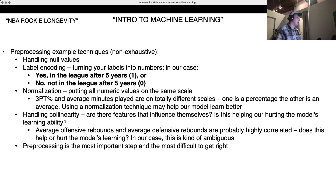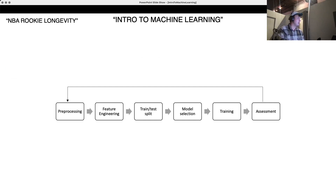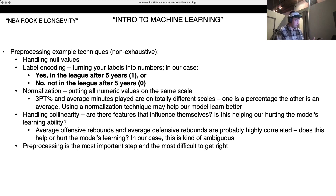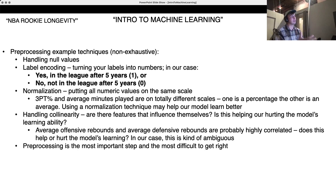Next, normalization. We've got all these numbers — for example, three-point percentage is on a percentage scale out of 100, and then we've got data points like average minutes played, which are totally different scales. What normalization does is put all these different ranges of numbers in our features on the same scale. This may or may not help our model learn better, but if you've got wildly different scales, it can sometimes throw the model off. Because to the model, these aren't three-point percentage numbers — they're just numbers. Machines don't understand what they're looking at, at least not yet.